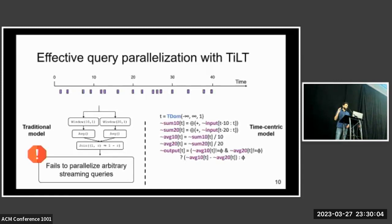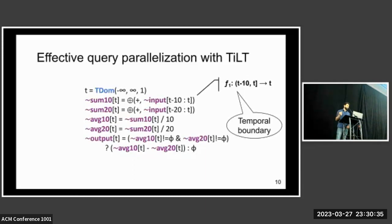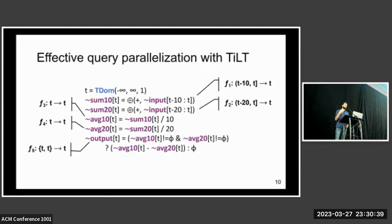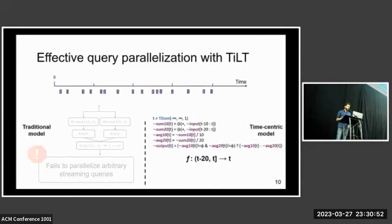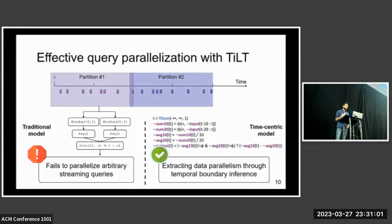Let's see how TILT can overcome this issue. On the right-hand side, I show the TILT IR definition of the exact same query. The TILT query is composed of temporal expressions, and each temporal expression is defined as a functional transformation over time. For instance, the value of sum_10 at time t is derived from the value of input between the interval t minus 10 and t. This is called the temporal boundary of an expression, and every single temporal expression has this well-defined temporal boundary. Using this semantic information, we can find the temporal boundary of the entire query by composing all these functions together, no matter how arbitrarily complex the query is. Using this temporal boundary information, we can partition the data stream and parallelize the query across the partitions. By extracting data parallelism through temporal boundary inference, TILT is able to parallelize any arbitrarily complex queries.